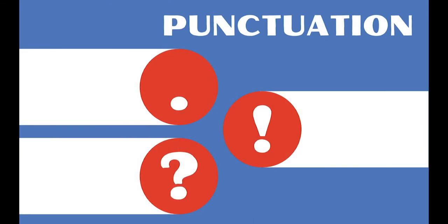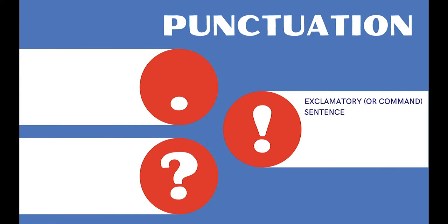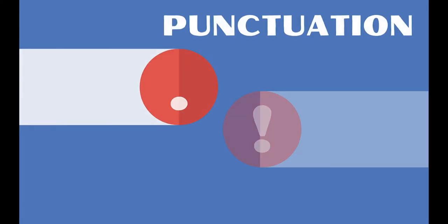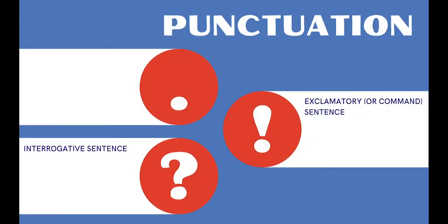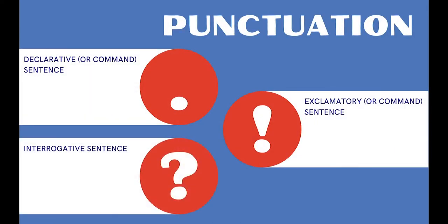If you remember from English classes, an exclamatory sentence is one that has an exclamation mark at the end, and it's exclaiming something. An interrogative sentence is one that has a question mark at the end, and it's asking a question. And a declarative sentence is one that has a period at the end.